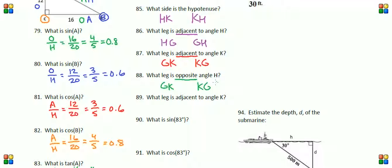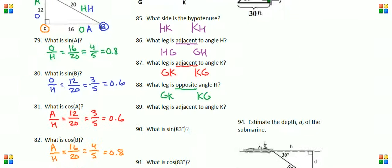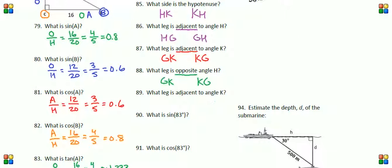Notice, class, the adjacent leg to angle K is actually the same leg as the opposite leg to angle H. That makes sense because when we choose a different reference angle—angle H or K—the opposite and adjacent legs actually switch around.